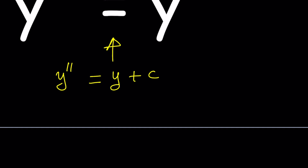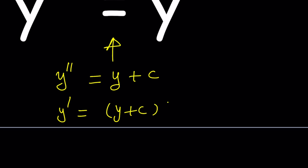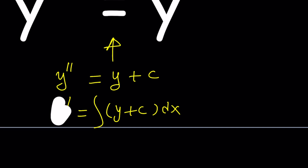We have y double prime is equal to y plus c. I could integrate both sides one more time — it's going to give me y prime. But then we don't even know what y is, so how are we going to integrate it? We can't do it. We're kind of stuck here, so we need to do something else.